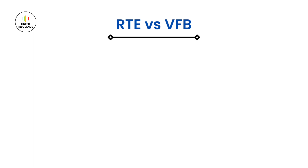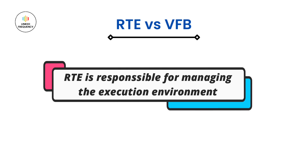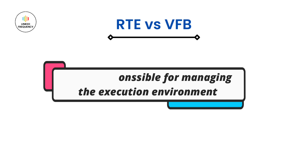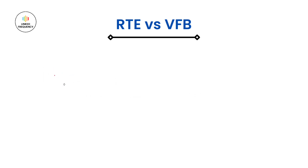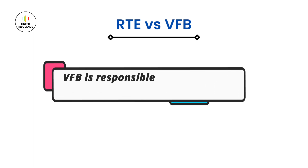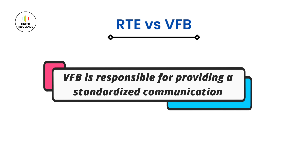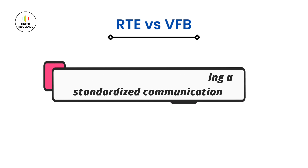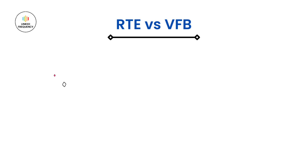Moving on to the third difference, based on responsibilities: the RTE is responsible for managing the execution environment, including scheduling tasks, managing inter-component communication, memory allocation, and error handling within a single ECU. Whereas Virtual Functional Bus is responsible for providing a standardized communication infrastructure that enables communication between software components across different ECUs — it handles message routing, transformation, scheduling, and error handling in a distributed system.